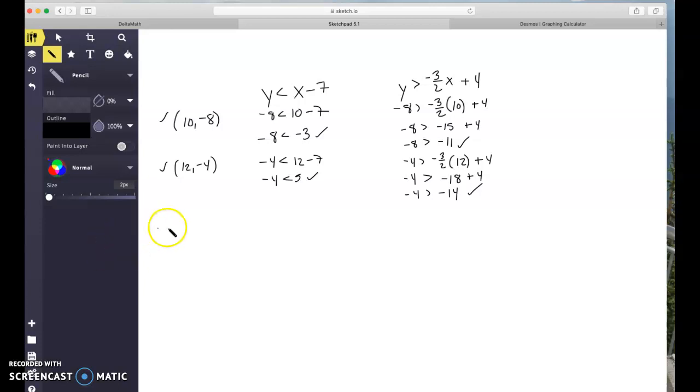All right, let's see if we can find a point that's not going to be on the line. So let's try 10 negative 4 next. All right, so we've got negative 4 is less than 10 minus 7. And 10 minus 7 is 3. That's a true statement. Negative 4 is less than 3. Let's try it again with our other equation or inequality. Negative 4 is less than negative 3 halves times 10 plus 4.